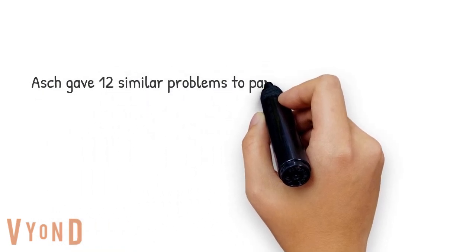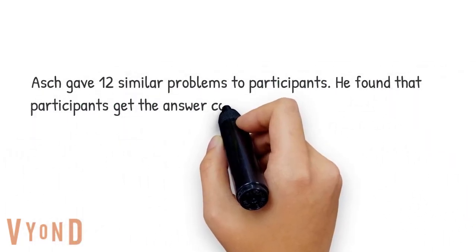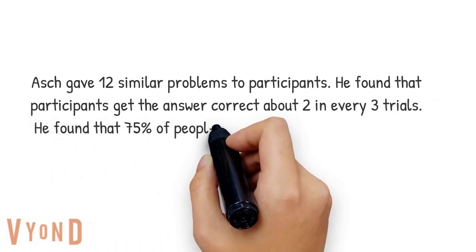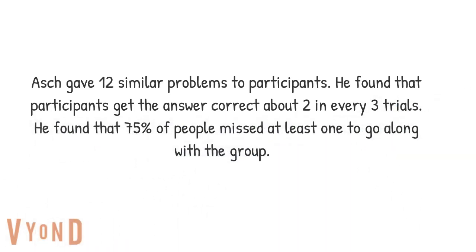Asch found that participants go against the group and get the correct answer about 8 out of 12 trials, which is a lot lower than answering all 12 correctly, which is what he generally found when participants answered by themselves. Even more striking is that 3 out of 4 people purposefully miss at least one answer to go along with the group. This shows that most people may do something they know is wrong in order to fit in or conform to the group.